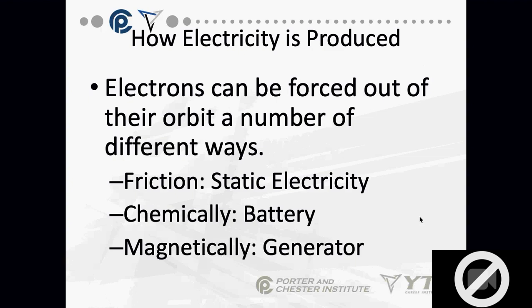For friction, think about petting a cat backwards in a dark room — you see sparks. Batteries work chemically. A generator works magnetically by spinning a magnet in a spool of wire. That's how we produce most of our power.